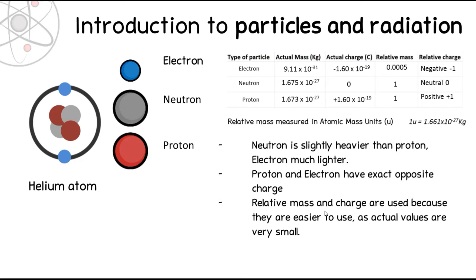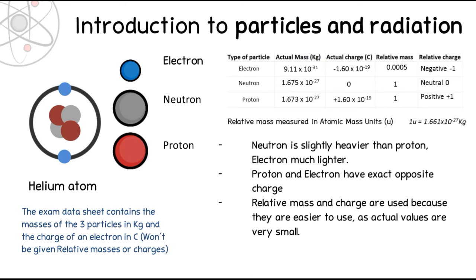I've got that summarised in text here. An important thing to know is that the exam data sheet - at least for the AQA exam - does contain the actual masses of all three particles, as well as the actual charge in coulombs of an electron. If you know the actual charge for an electron, you know it for a proton too. You will have to remember the relative masses and relative charges, which is slightly annoying but it's GCSE level so it shouldn't be too difficult.